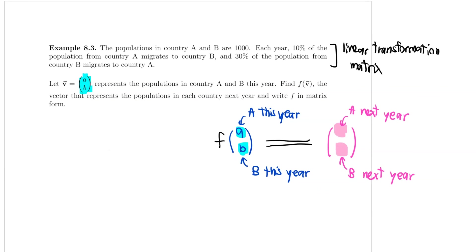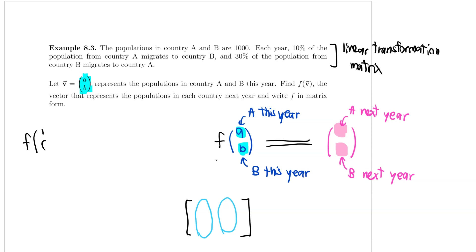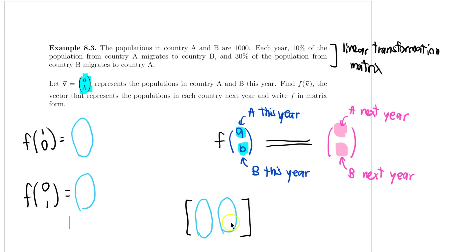Because this F is a linear transformation, I can write it as just matrix multiplication. To find the entries of my matrix, I can think of it column by column: the first column is just F of (1, 0), and whatever that is becomes the first column of my matrix. Then to find the second column, I just need to find F of (0, 1), and whatever that is becomes the second column.